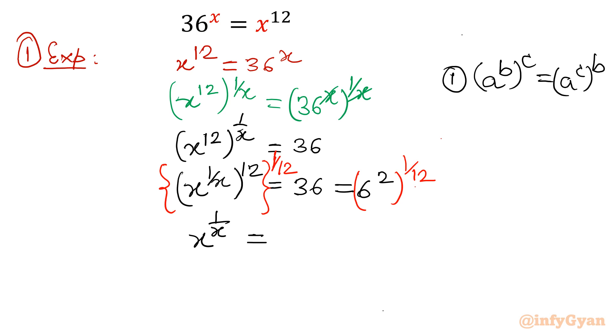So let me write x power 1 over x. It will come out, this 12 will get over, 6 raised to the power 2 times 1 over 12. So it will come out 6 power 1 over 6. Now once you will compare both sides, base is 6, exponent is same. So conclusion x will be equal to 6.